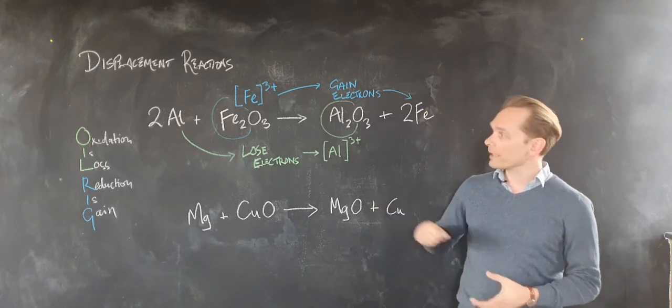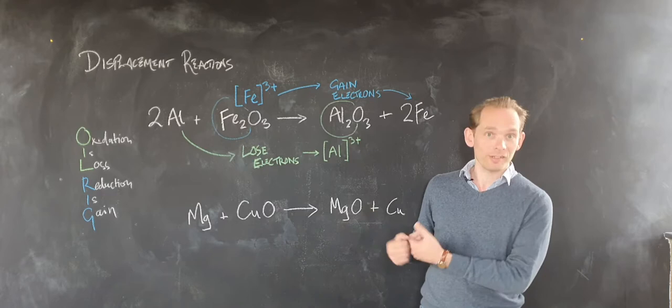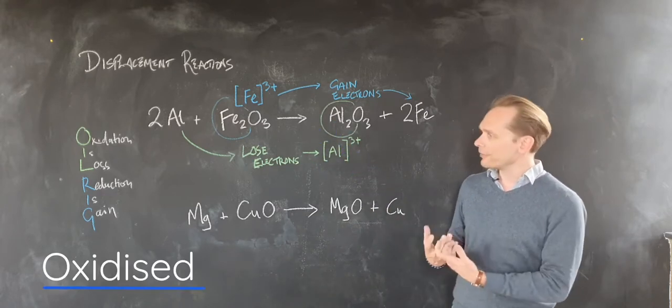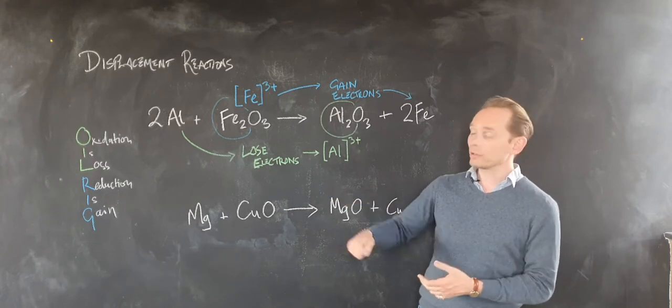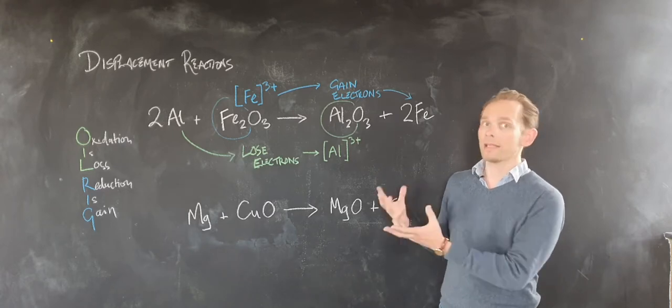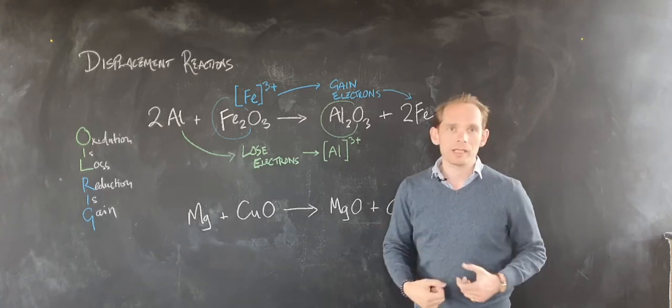So if you have a metal losing electrons become a metal ion like this aluminium I'm going to show you, that's being oxidized. If you have a metal ion then gaining electrons to become a metal again, that's being reduced.